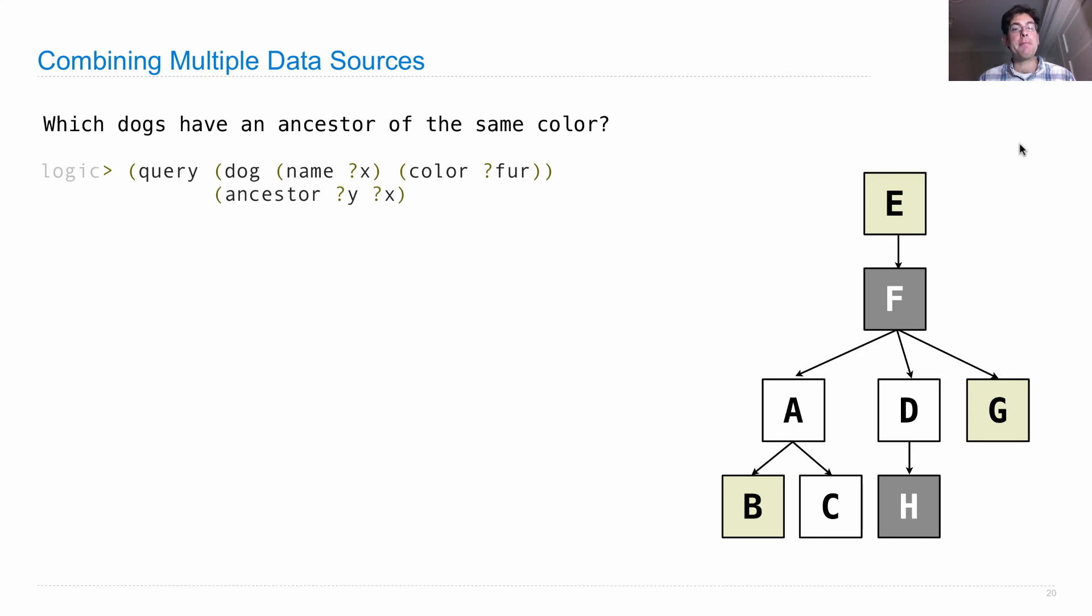I also need it to be the case that there's an ancestor relation between Y and X. So X is the dog, Y is the ancestor. Fur is the color of the ancestor's fur, which is supposed to be shared with the dog.